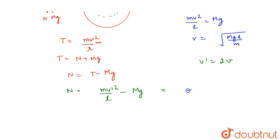Then this will be 4 capital MGL multiplied by M divided by L multiplied by M minus MG. So, we can cancel ML from ML to ML and the normal reaction value will be 3 times of MG.